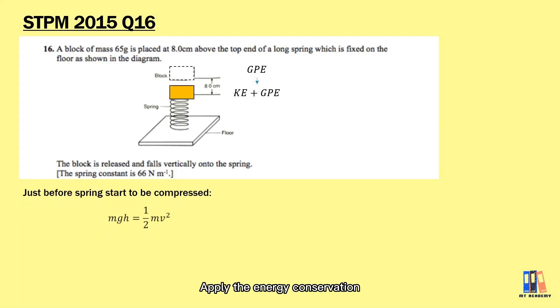Apply the energy conservation where mgh = ½mv². We can obtain the velocity of object before it starts to compress the spring is equal to 1.25 meter per second.